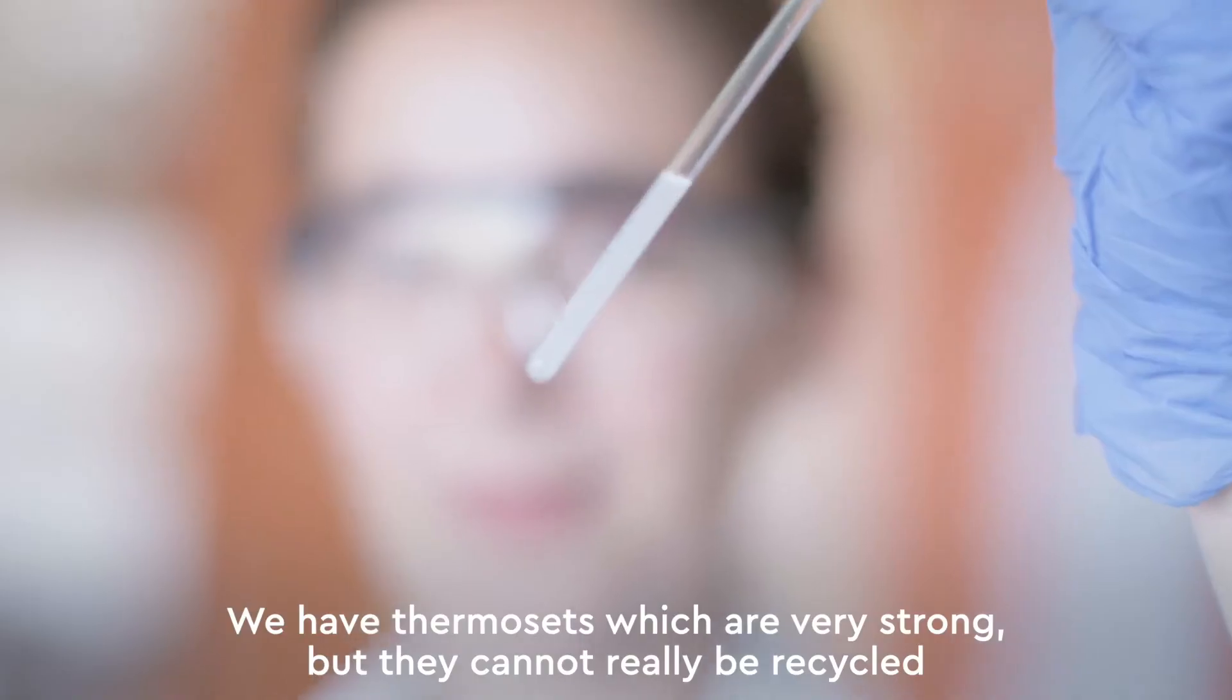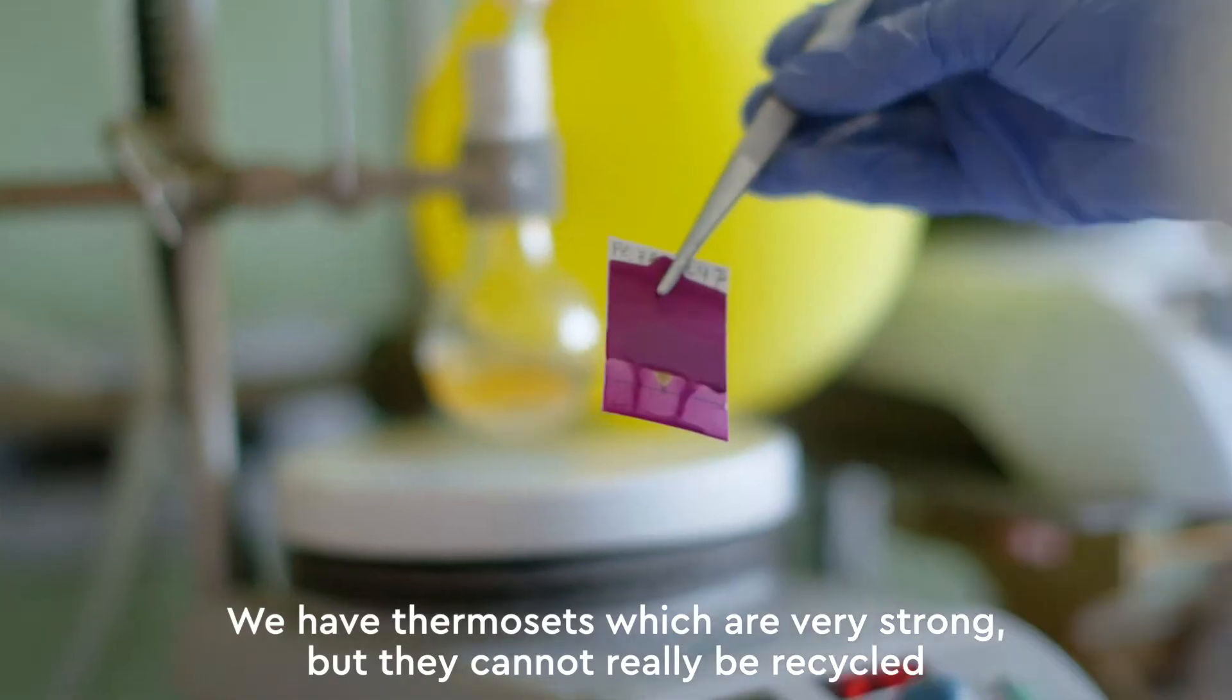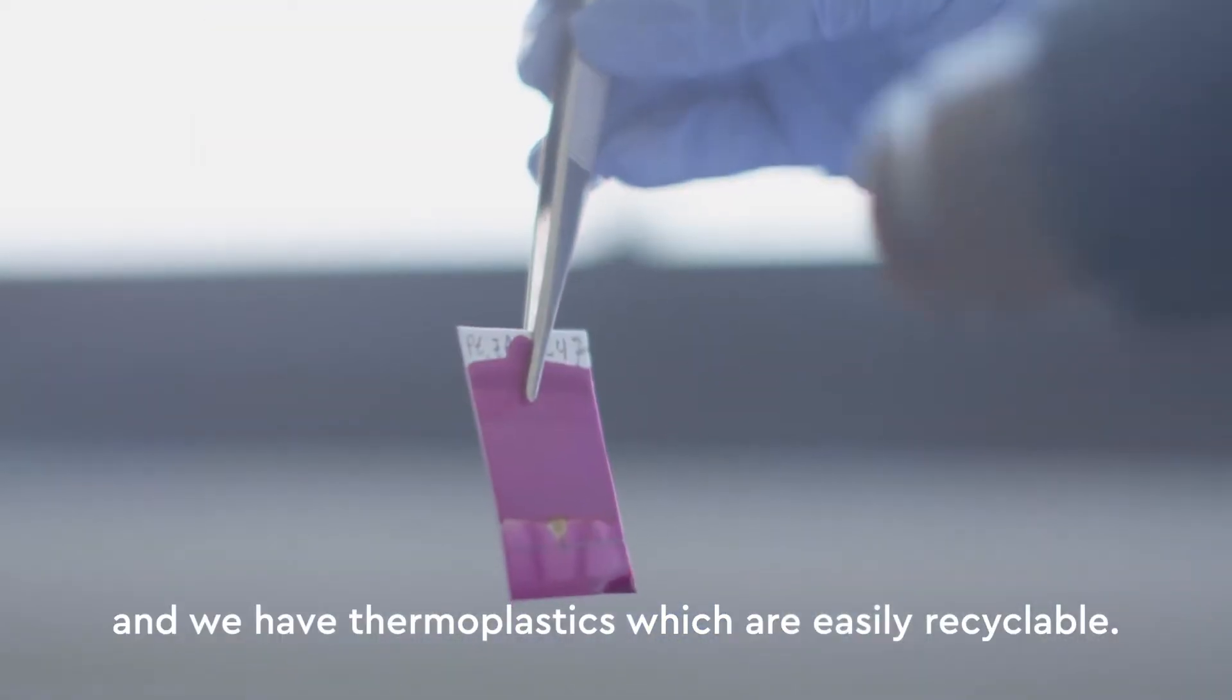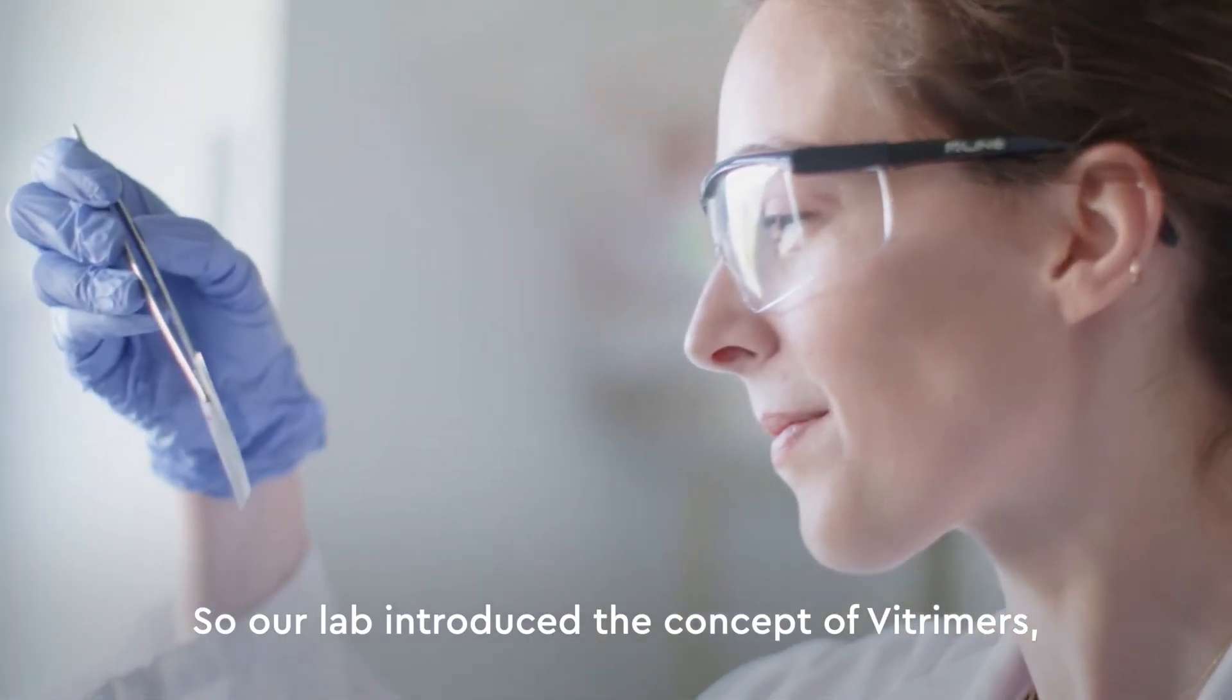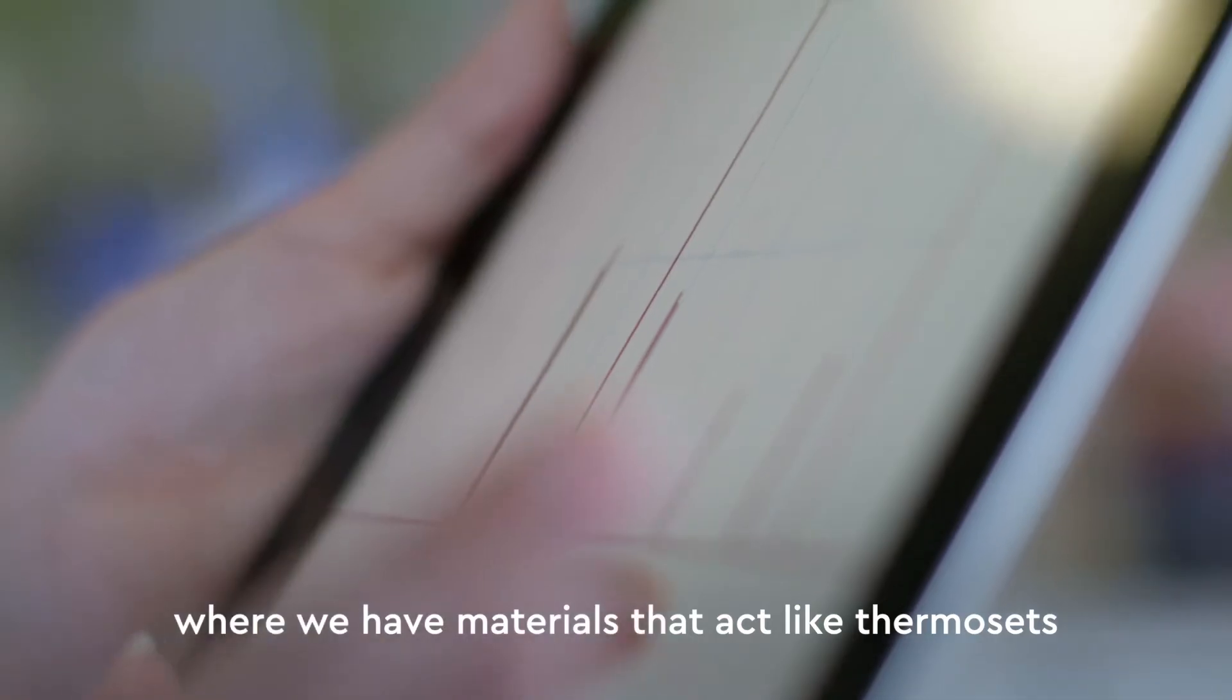Traditionally, there are two different types of polymers: thermosets, which are very strong but cannot be recycled, and thermoplastics, which are easily recyclable. Our lab introduced the concept of vitremers—materials that act like thermosets but can be reshaped and recycled into new things.